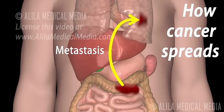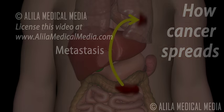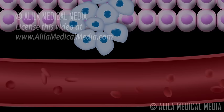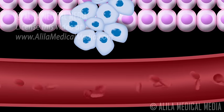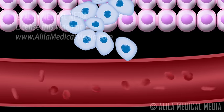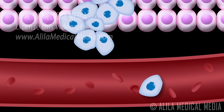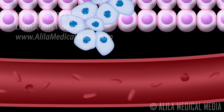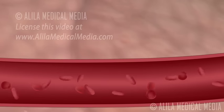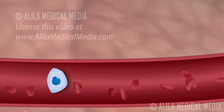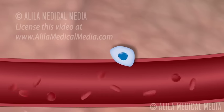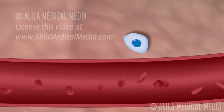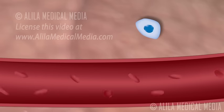Metastasis is the spreading of cancers to non-adjacent organs. Cancer cells from the original tumor, or primary cancer, can break out and may be taken up by a blood or lymph vessel for a ride throughout the body. They can then squeeze out from the vessel into other tissues and start a new tumor growth in the new location, which will become secondary cancer.